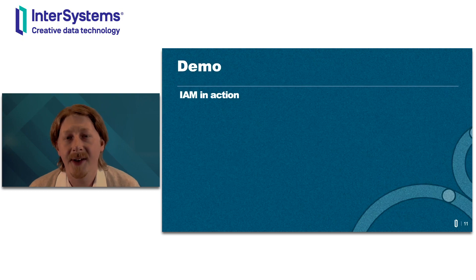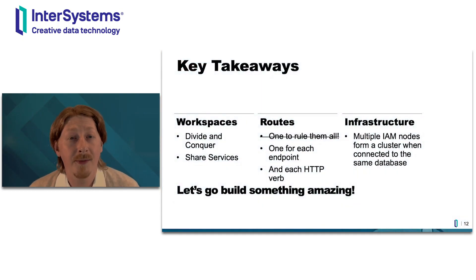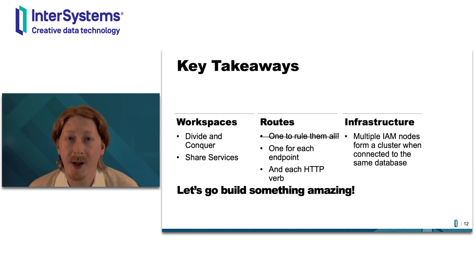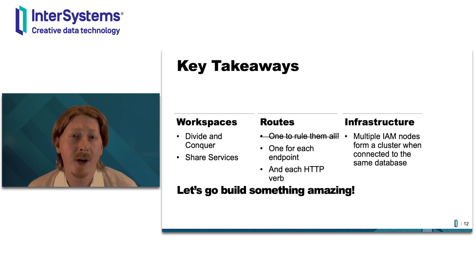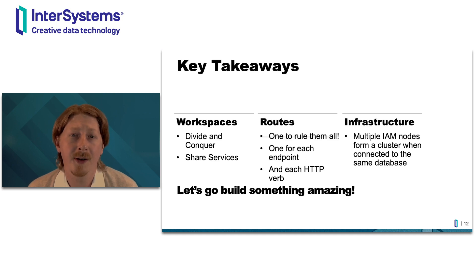Now that we've seen this in action, let's look at the key takeaways. Make sure to leverage workspaces and divide responsibilities across multiple teams working on separate projects. For routes, never build a catch-all — always build one route for every individual endpoint and each HTTP verb you support. For infrastructure, IAM nodes automatically form a cluster when linked to the same database, allowing you to scale horizontally and offer high availability.